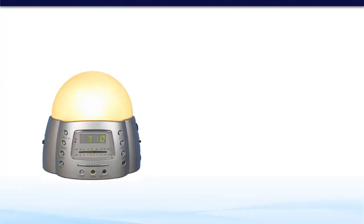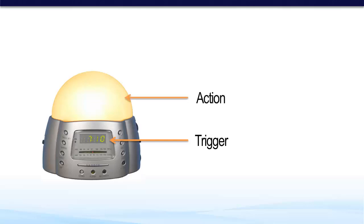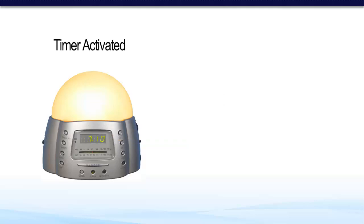Workflows are made up of a trigger and an action. Take for example this sunrise clock. The sunrise clock can be set to activate at a certain time and trigger the light at the top of the alarm to help you wake up. The trigger is the timer on the clock, and the action is the light that switches on. That's simply what a workflow is — it's a trigger and an action.